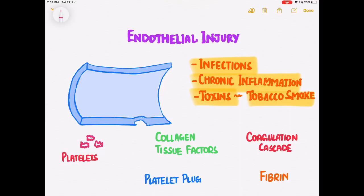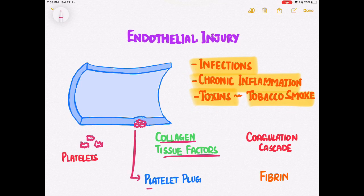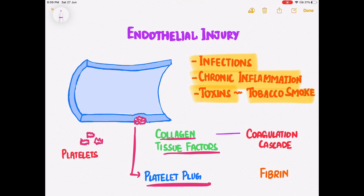Endothelial injury exposes the collagen and several tissue factors which attract platelets to the site of injury, ultimately causing the adhesion and activation of several other platelets, finally leading to formation of a platelet plug. After that, the coagulation cascade is also activated, whose final product is fibrin. This fibrin forms a meshwork around the platelet plug, and this fibrin meshwork along with the platelet plug is what we commonly call the thrombus.